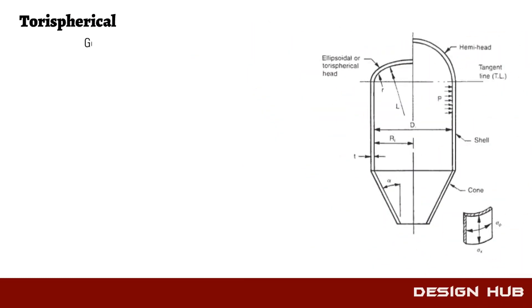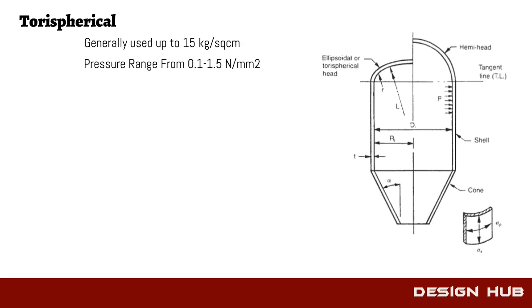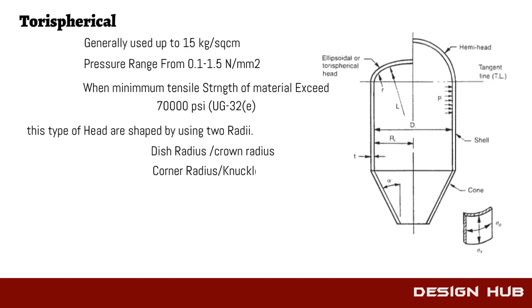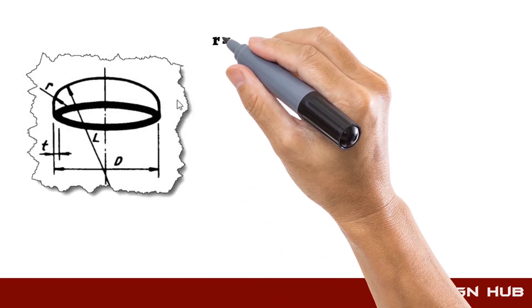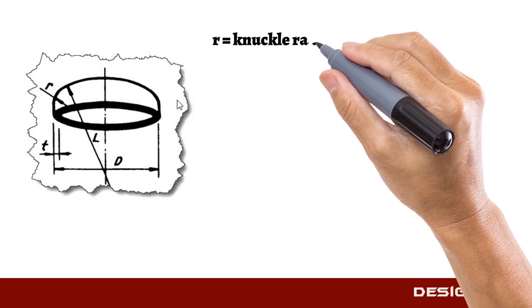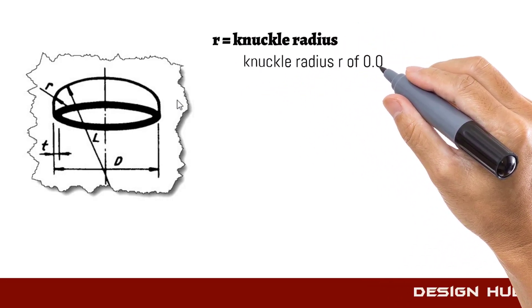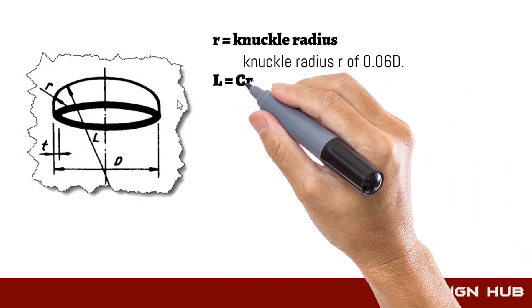Torospherical heads are generally used up to 15 kilograms per square centimeter. This is designed as per UG-32E. In this type of head there are two radii: the first is the dish radius, and the second is the knuckle radius. Its radius and thickness can be calculated by the following formulas.